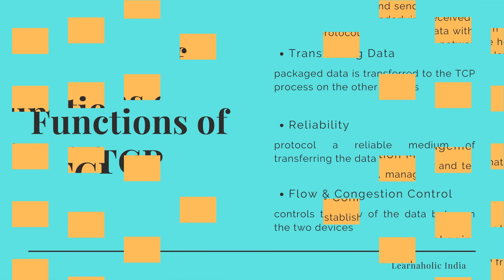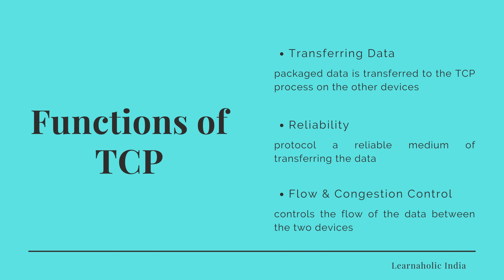The software at the receiving end unpackages the data and supplies it to the application on the destination machine. Next is transferring the data — the packaged data is transferred to the TCP process on the other device following the layered principle. Next is providing reliability and transmission quality service, involving features that allow an application to treat the protocol as a reliable medium. Finally, providing flow control and congestion avoidance controls the flow of data between two devices and deals with congestion.